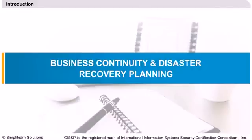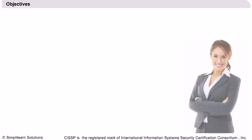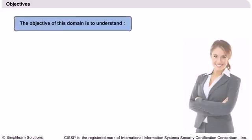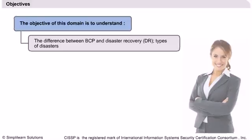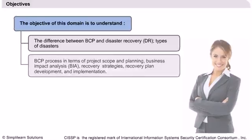The CISSP candidate must have an understanding of the preparation of specific actions required to preserve the business in the event of a major disruption to normal business operations. The CISSP candidate is expected to know the difference between business continuity planning and disaster recovery — business continuity planning in terms of project scope and planning, business impact analysis, recovery strategies, recovery plan development, and implementation.